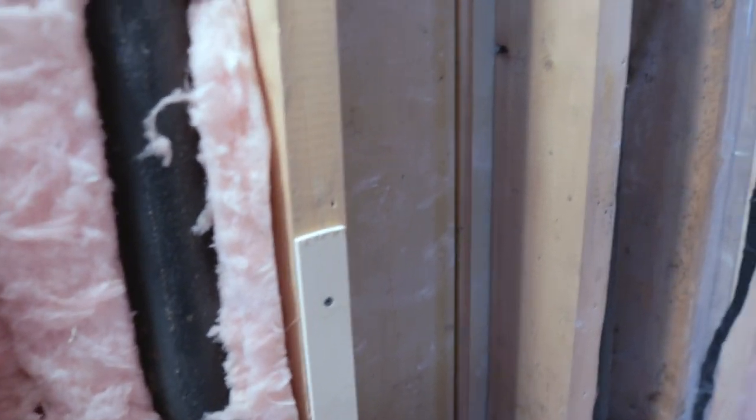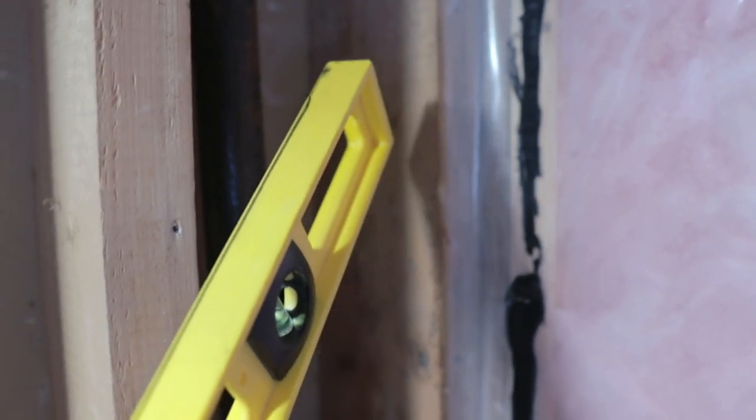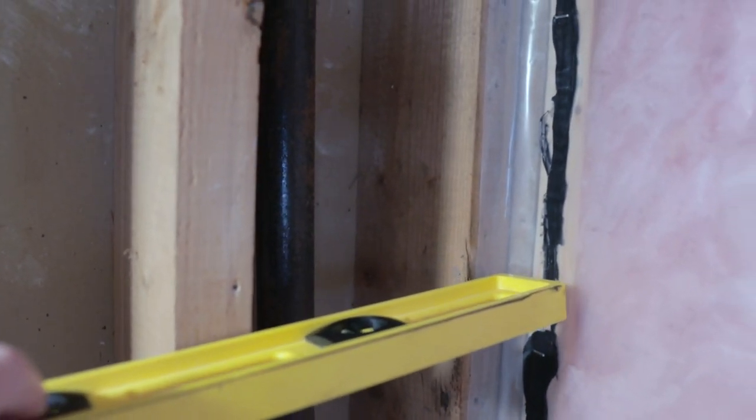So what I'm going to do is put quarter inch furring strips on these studs. I'm going to do this one and the one on the edge here. I'm not going to put anything on this one, and I'm going to install a sister stud on this one here to bring it out from the wall. I'll put the level on it and use that to set the distance out for my sister stud in the corner.